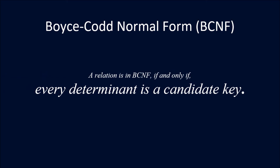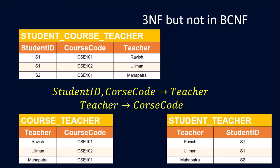For BCNF, every determinant must be a candidate key. In this example, which is already in 3NF but not in BCNF, we have student ID, course code, and teacher. Student ID and course code together can identify teacher, but teacher can also identify course code. Since teacher is not a candidate key, these two functional dependencies together violate the condition for BCNF.